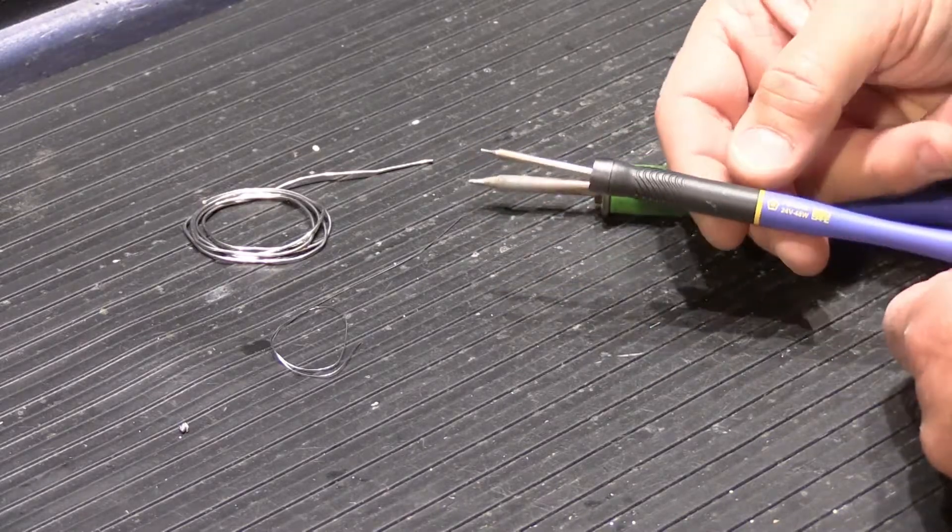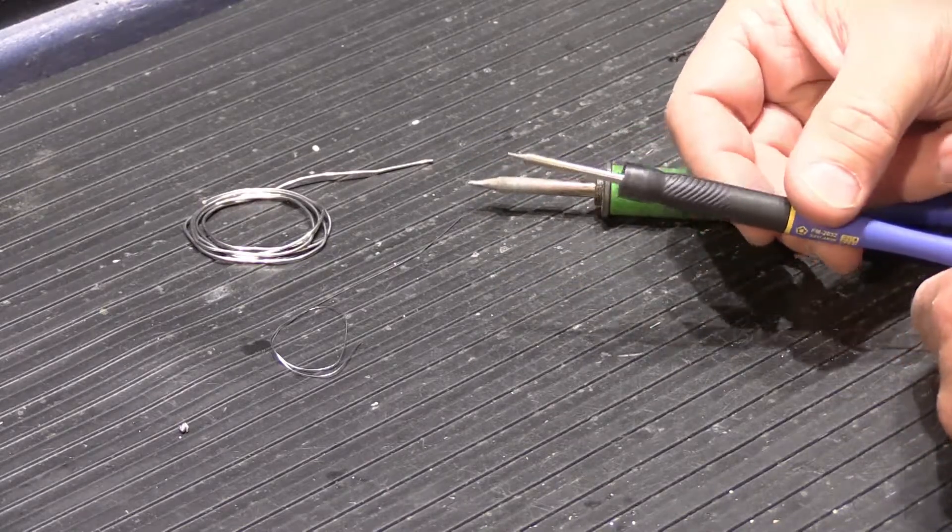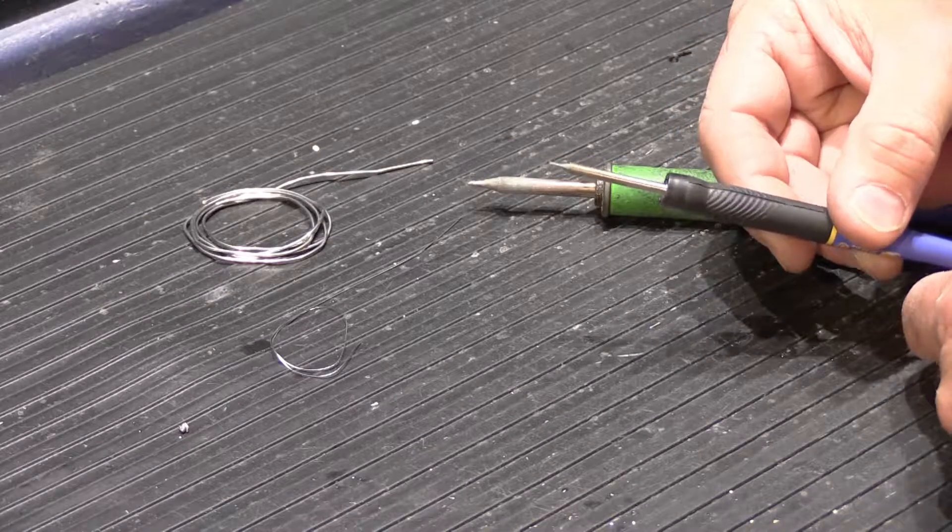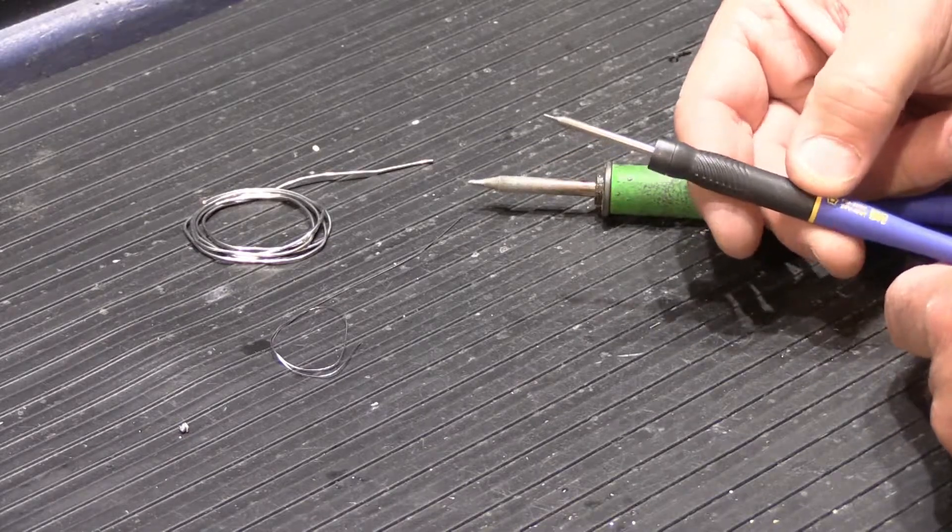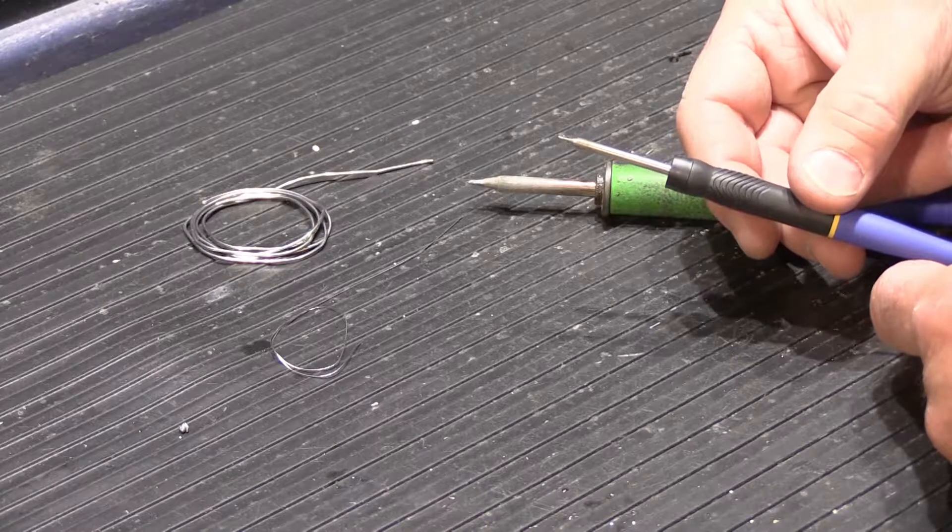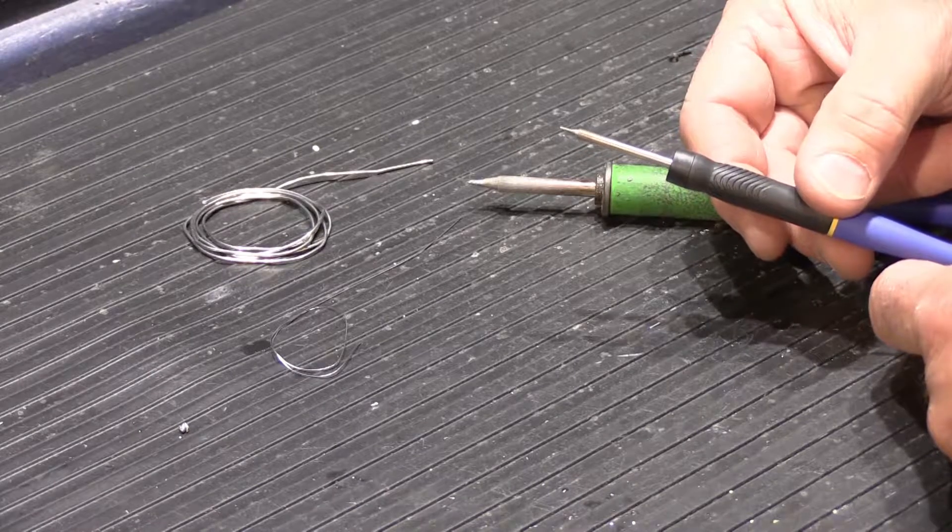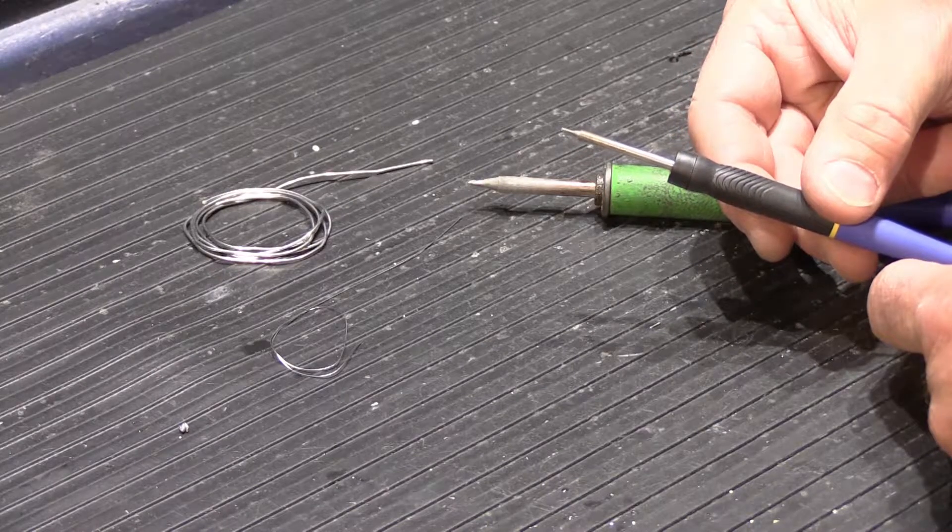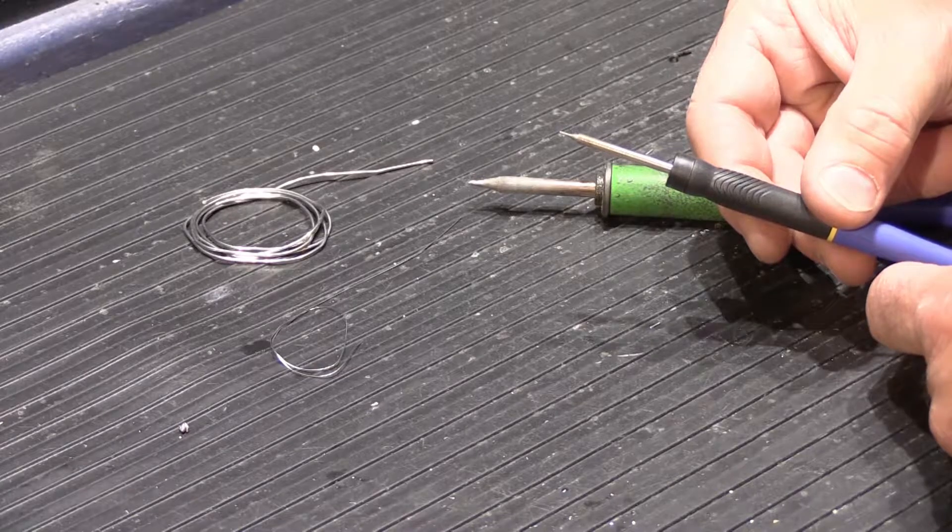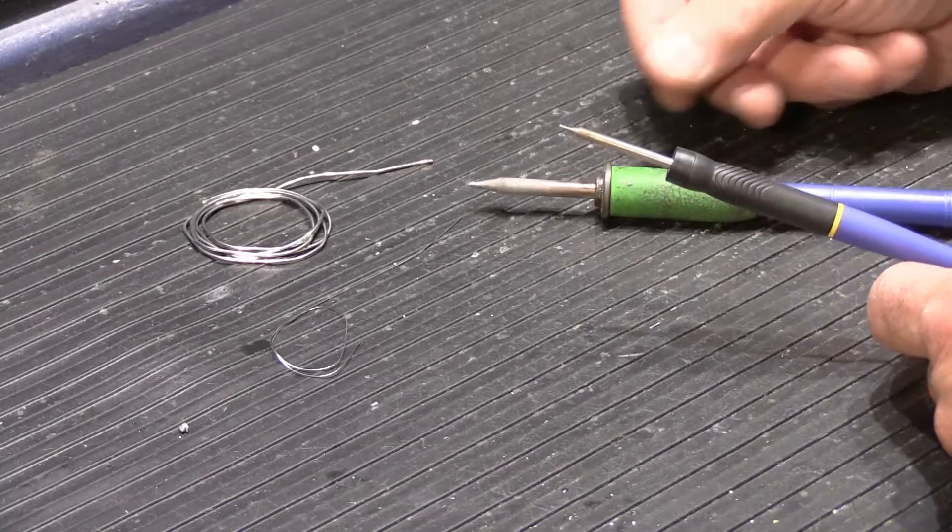So I decided to get this HAKO 2032 micro soldering pencil. The thing I like about this is that it's compatible with my FX-951 soldering station. You can plug it right in, so I don't have to buy a new soldering base station.